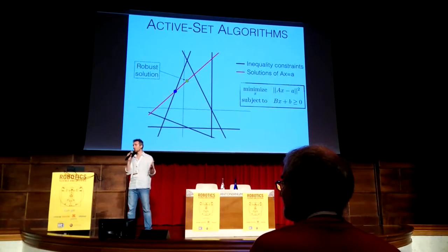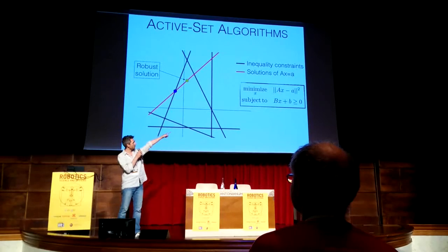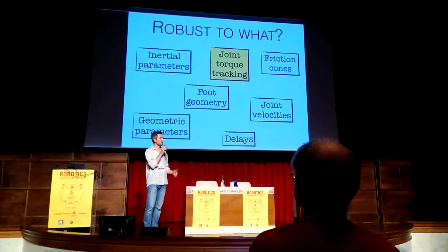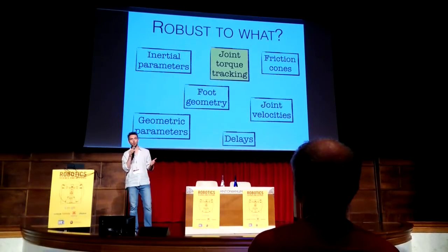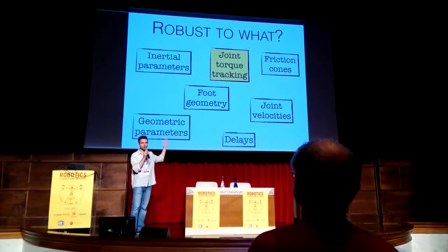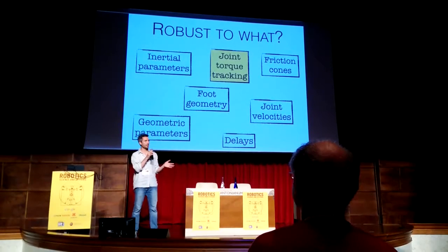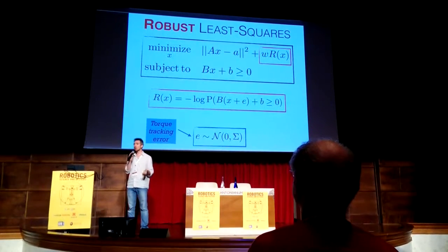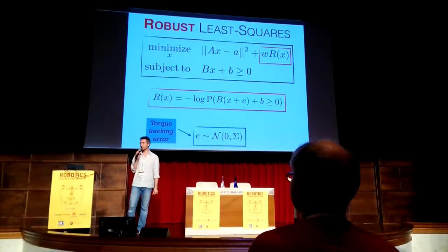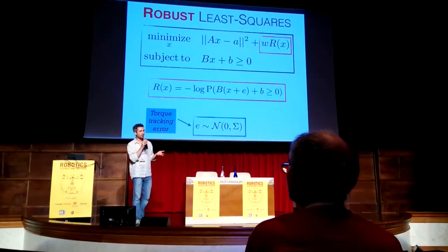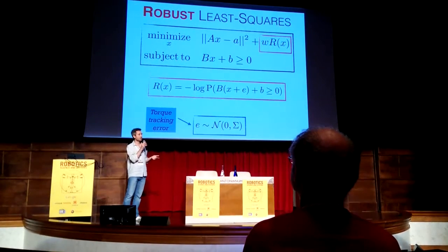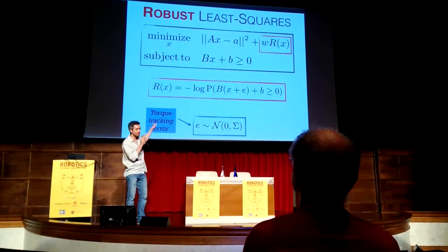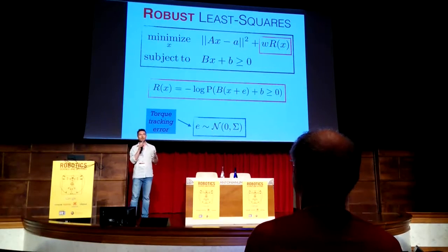In a nutshell, in this work we are proposing a way of modifying the base optimization so that it gives you solutions that are robust. In particular, among all the possible uncertainties affecting legged robots, here we are focusing on the joint torque tracking errors — that is, the difference between the desired joint torques and the real joint torques. We model this error as a Gaussian with zero mean and a known covariance matrix. Then we modify the optimization by optimizing at the same time the standard cost — the tracking error — and the probability that all your inequality constraints are satisfied.